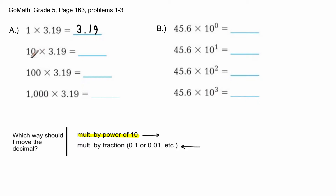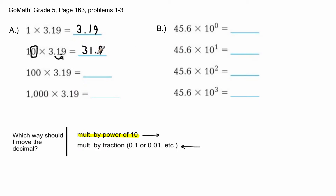Now we get into moving the decimal. For 3.19 × 10, I have one power of ten because there is one zero, so I move the decimal one space to the right — it moves from between the 3 and 1 to between the 1 and 9, giving 31.9. The decimal moves one space because it's one power of ten.